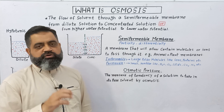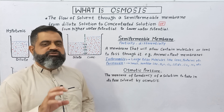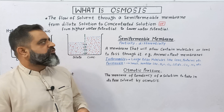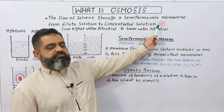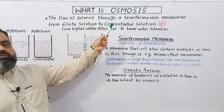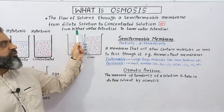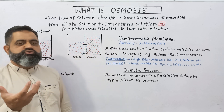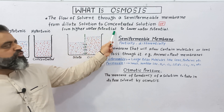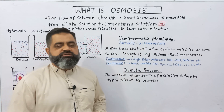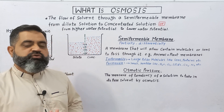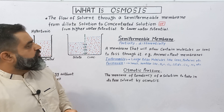Dilute solution is a solution which contains less amount of solute, while concentrated solution is a solution which contains more amount of solutes. We can also define osmosis as the flow of solvent through a semi-permeable membrane from higher water potential — usually present in dilute solution — to lower water potential, which is usually present in concentrated solutions containing a high amount of solutes.